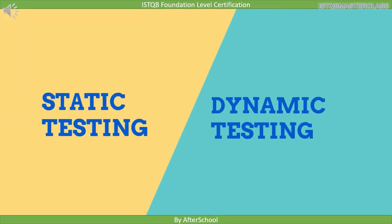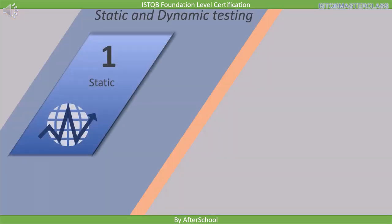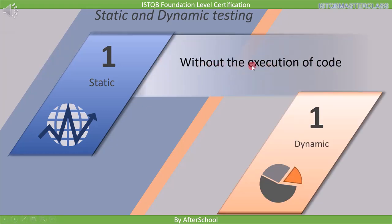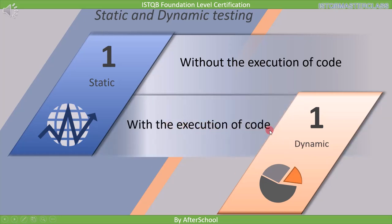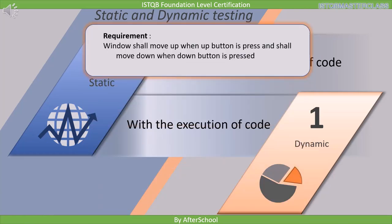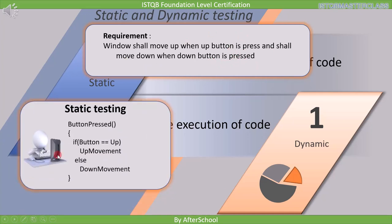Now we are going to discuss dynamic testing versus static testing. The first point of difference is that static testing is done without execution of code, whereas in dynamic testing we are executing the code. Let's illustrate this with an example. Suppose a customer requirement states: 'window shall move up when the up button is pressed and shall move down when the down button is pressed.' To fulfill this requirement, you have to write code. Suppose a developer has written a function: when button is pressed, if button up, then move up, otherwise move down. Our task as a tester is to check whether this piece of code satisfies the requirement — and this type of testing is known as static testing.